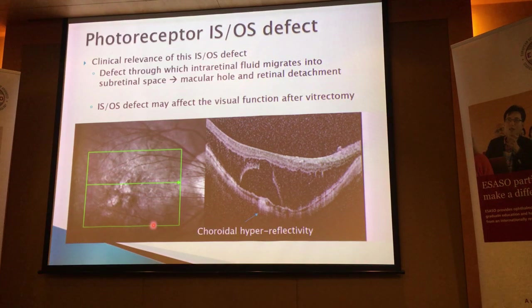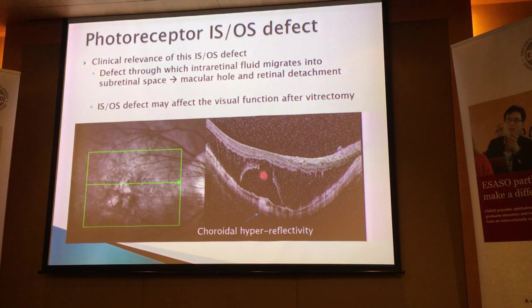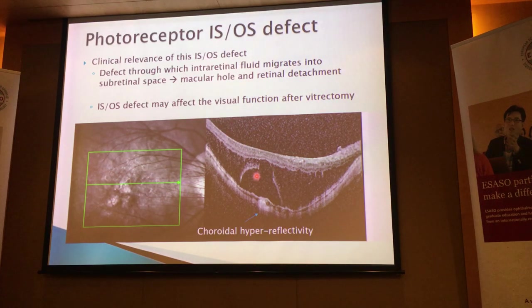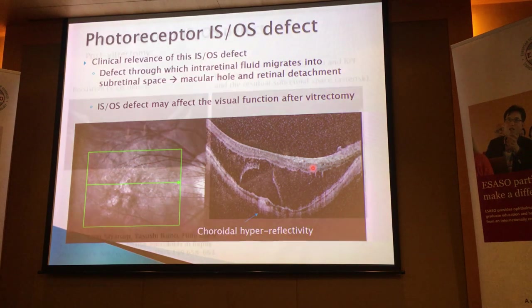What about photoreceptor IS/OS defects? What is the clinical relevance — is it just an OCT finding? No, it is not. This patient has foveal detachment in addition to the schisis, confirmed by choroidal hyperreflectivity in this area — indicating more transmission over the area deficient of the IS/OS junction. The clinical relevance is that any defect in this layer can result in intraretinal fluid in the schitic cavity migrating either into the subretinal space to cause retinal detachment, or through the very thin area to form a full-thickness macular hole. If you have any intention of doing vitrectomy, you'll want to note this IS/OS defect, as it could affect visual function after intervention.